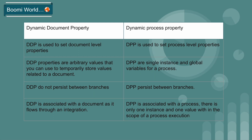Dynamic document property is used to set document-level properties, whereas dynamic process property is used to set process-level properties. Dynamic document properties are arbitrary values that you can use to temporarily store values related to a document. Dynamic process properties are single-instance and global variables for a process. Dynamic document properties do not persist between two branches — the document property set on branch one will not be available on a subsequent branch.